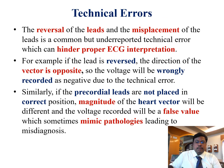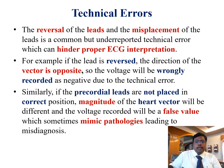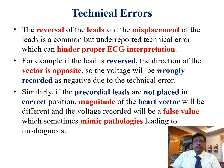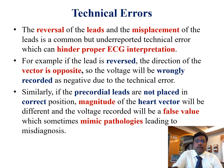The same cardiac hypothesis can also explain technical errors. Lead reversal and misplacement of leads are common but under-reported technical errors which can hinder proper ECG interpretation. If a lead is reversed, the direction of the vector is opposite, so voltage will be wrongly recorded as negative. Similarly, if precordial leads are not placed in the correct position, the heart vector will be different and voltages recorded will be false values, which sometimes mimic pathologies leading to misdiagnosis.